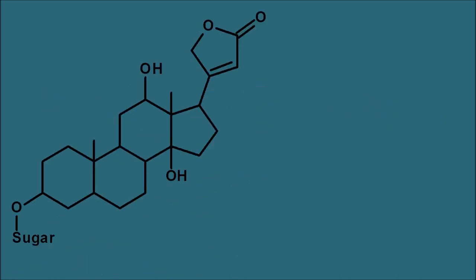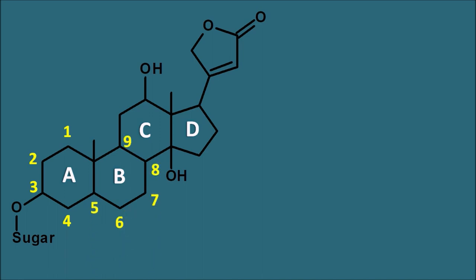This is the structure of the cardiac glycosides. They have a steroid nucleus and we can label the rings with letters A, B, C and D. Let us give the numbering for this steroid nucleus, going from 1 through 10, completing the numbering for ring A and ring B.